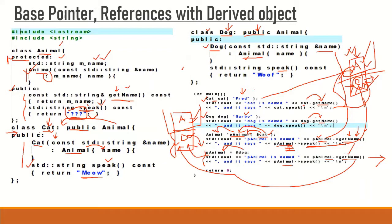Finally, the base class pointer p_animal tries to call speak — the same situation as with the Cat class. Since p_animal can only call speak from the base part, it again returns a placeholder string. The main point here is that a base class pointer cannot call a derived class version of a method; it can only execute its own base part. So if we inherit more animal types from Animal class, the base class pointer cannot execute how each animal speaks, giving the same base class output every time.